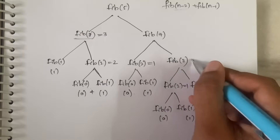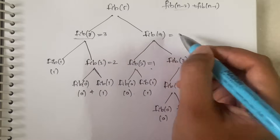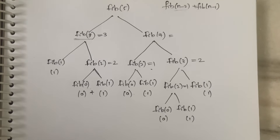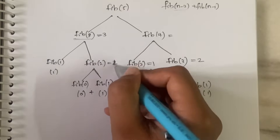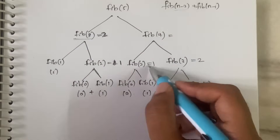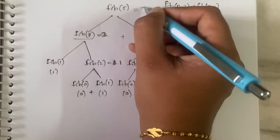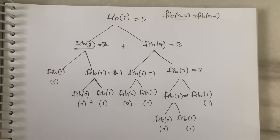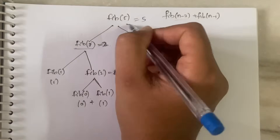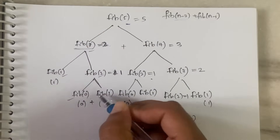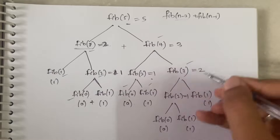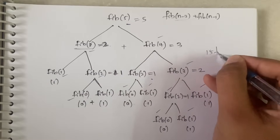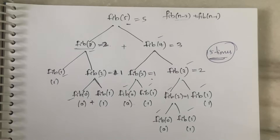Continuing: 1 + 2 = 3, so fib(4) = 3. Then fib(3) + fib(4) = 2 + 3 = 5, confirming fib(5) = 5. Now count how many times the fib function was called in this recursive tree: 1, 2, 3 ... 15 times total. So we are calling it far too many times — let's see if dynamic programming can reduce this.